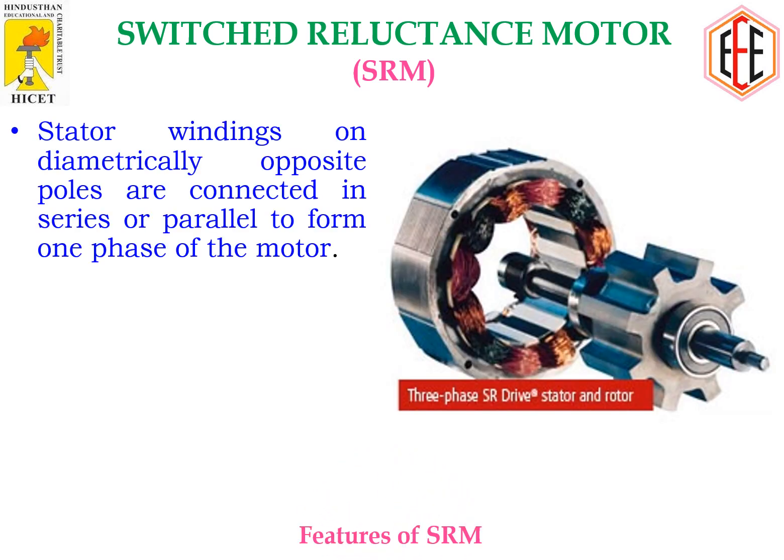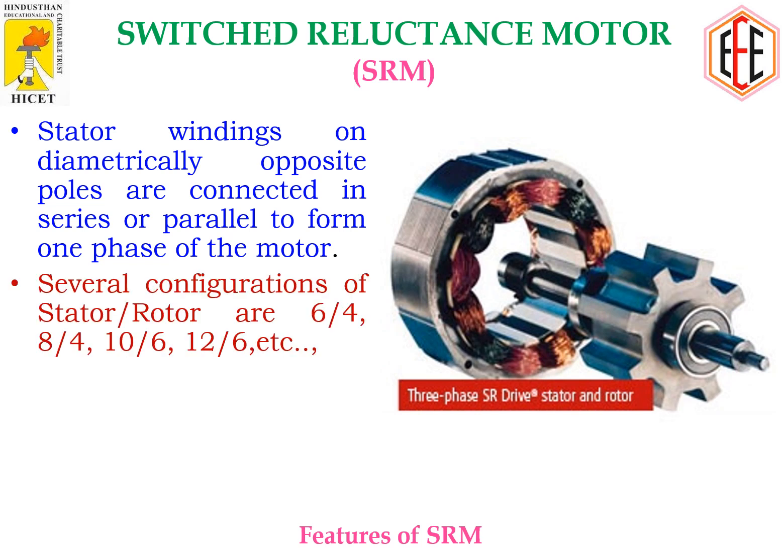The stator windings placed on diametrically opposite poles are connected in series and these are in parallel to form one phase of the motor. There are several configurations in the stator and rotor assembly — examples are 6×4, 8×4, 10×6, and 12×6, etc.